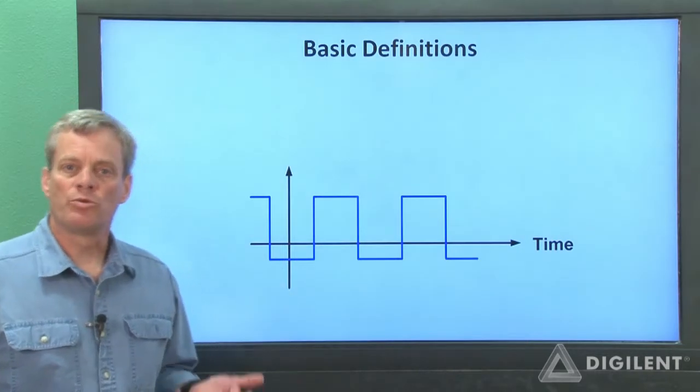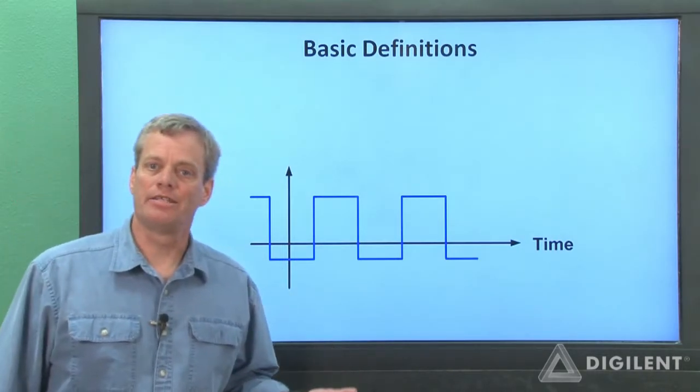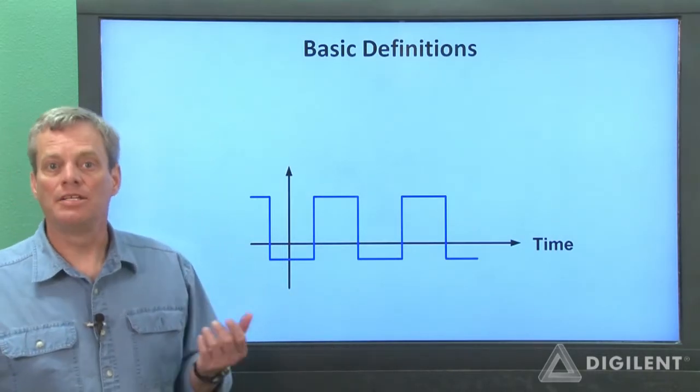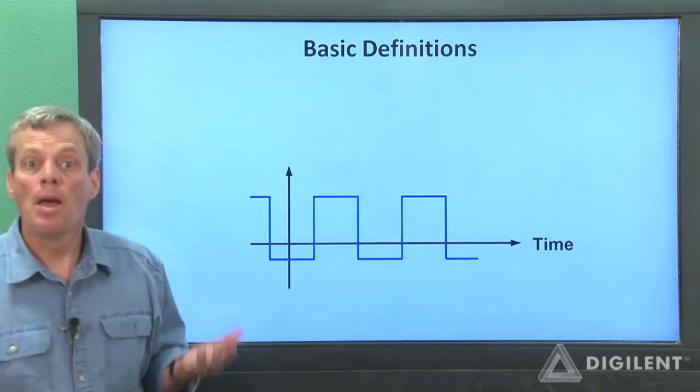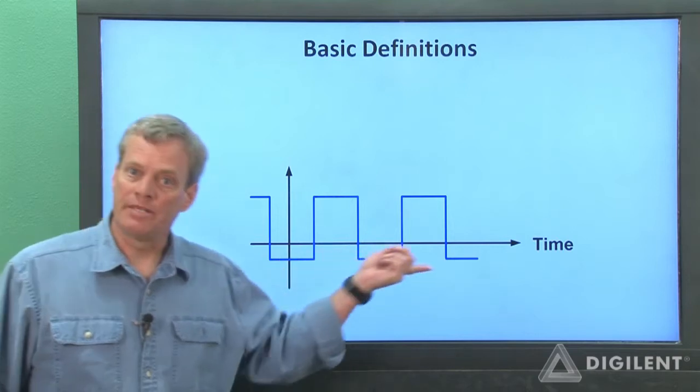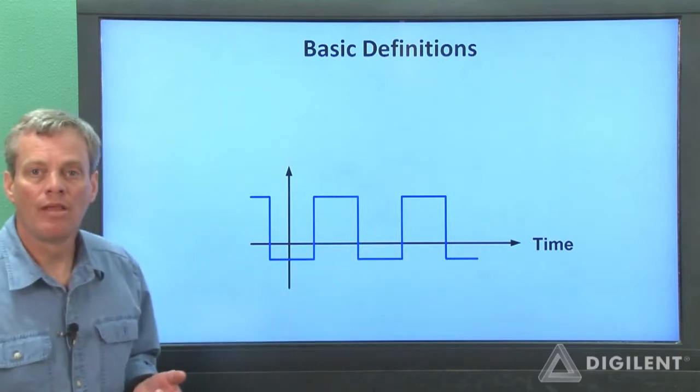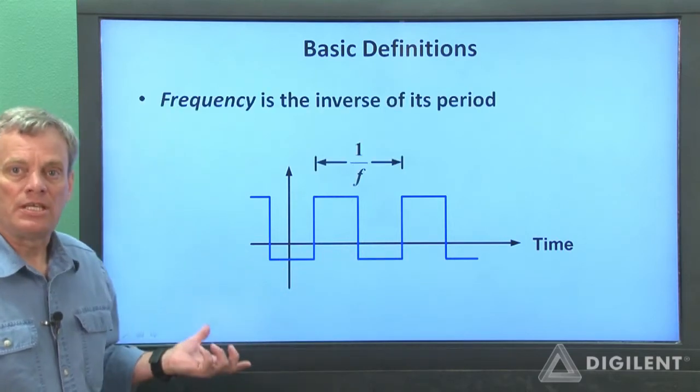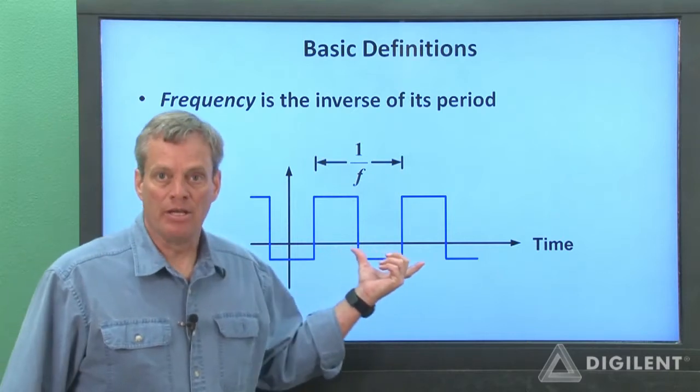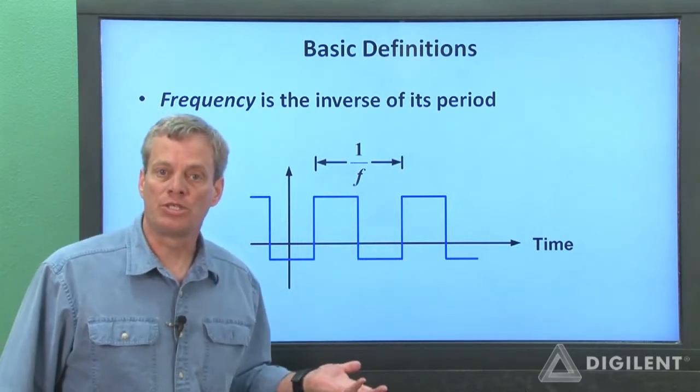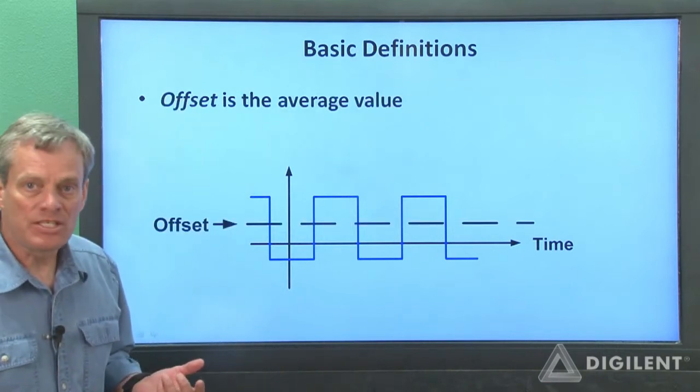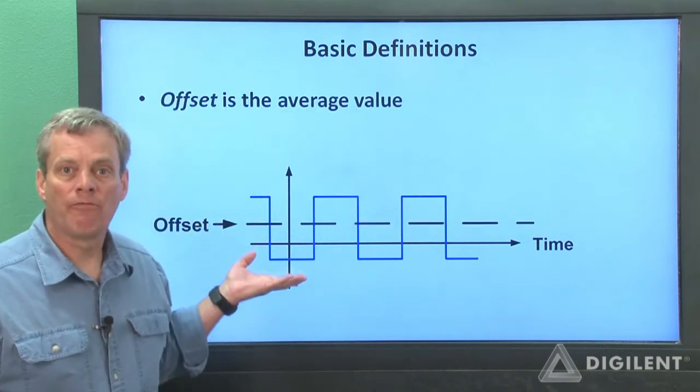There are a number of terms which are commonly used when generating signals using a waveform generator. I'll define these relative to the simple square wave shown here, but the definitions hold regardless of the specific wave shape. A signal's frequency is the inverse of the period. Units of frequency are hertz, which is the same as cycles per second.